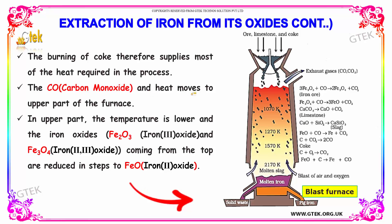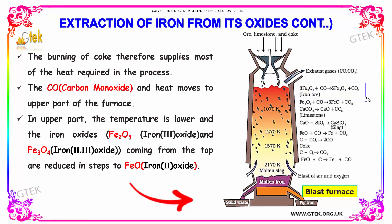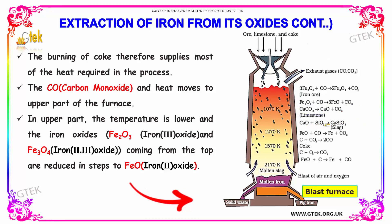Carbon monoxide moves up towards the top of the furnace. In the upper part, the temperature is lower, and iron oxides like Fe2O3 and Fe3O4 coming from the top are reduced in steps to FeO: Fe2O3 plus CO gives Fe3O4, and Fe3O4 plus CO gives FeO. Limestone produces CaO, which reacts with silica to form calcium silicate, that is slag. Finally, FeO reacts with carbon monoxide to give iron.